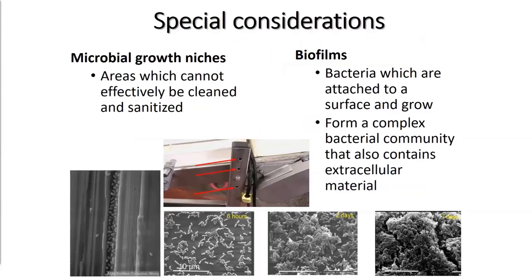Listeria monocytogenes has the ability to form biofilms, which are complex communities of bacteria. Once these biofilms have formed, they're very difficult to remove with routine cleaning or sanitation. Typically these biofilms form in what we call microbial growth niches — places that are really difficult to clean and sanitize in a facility.